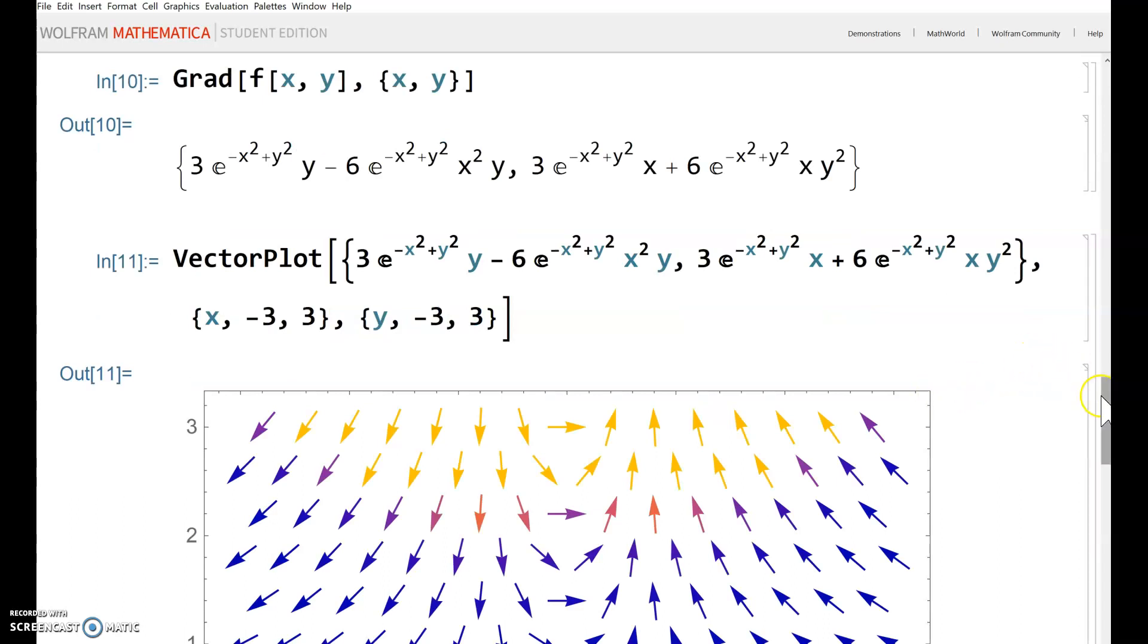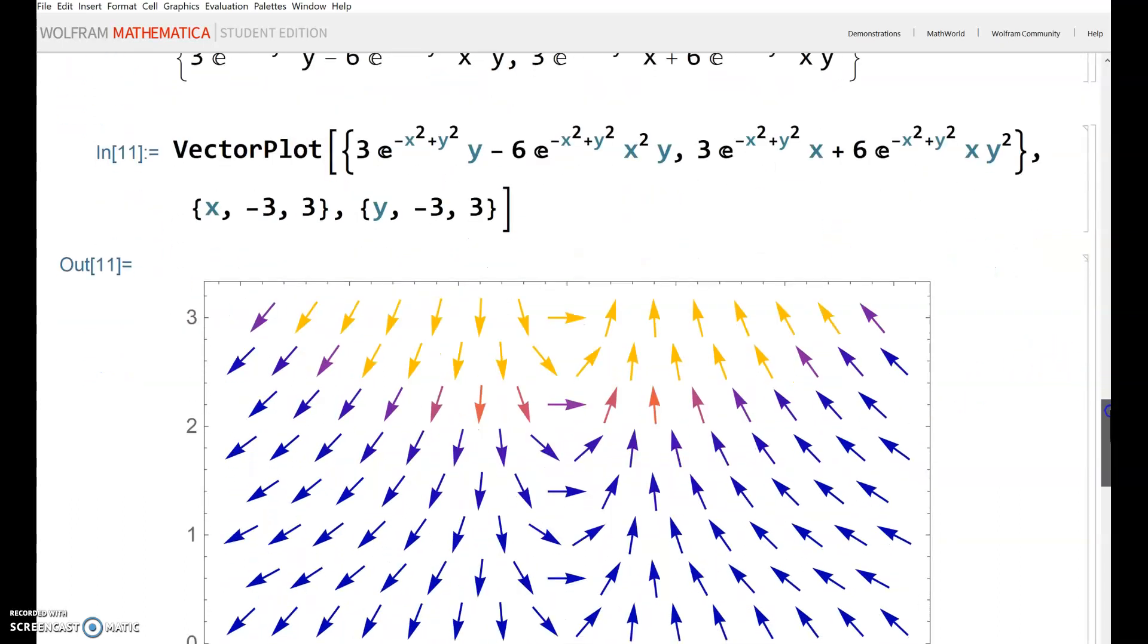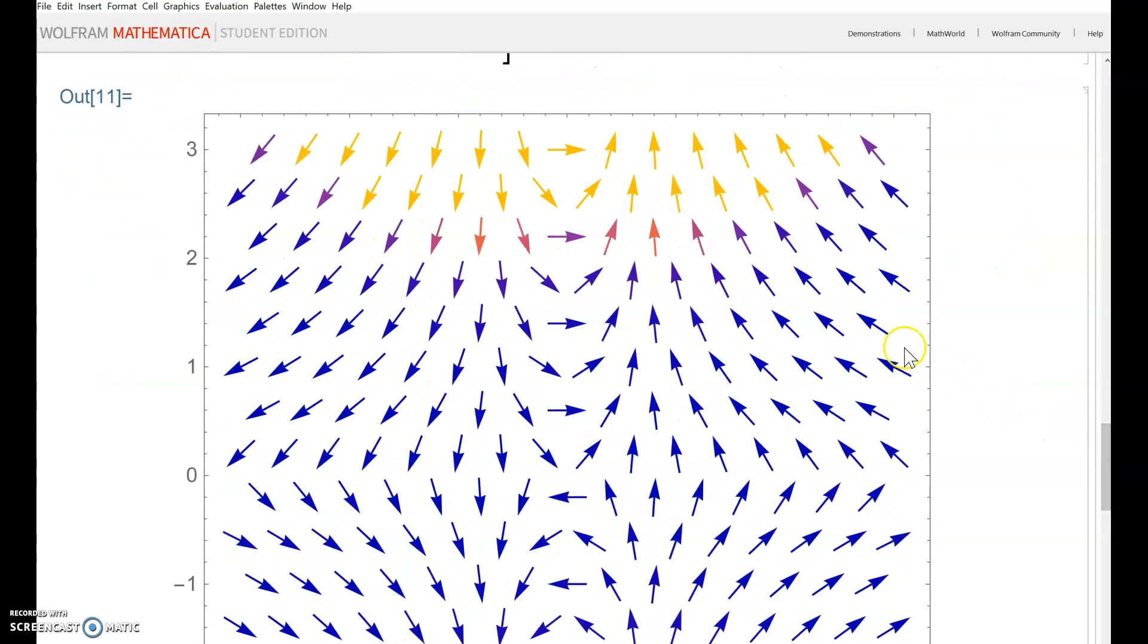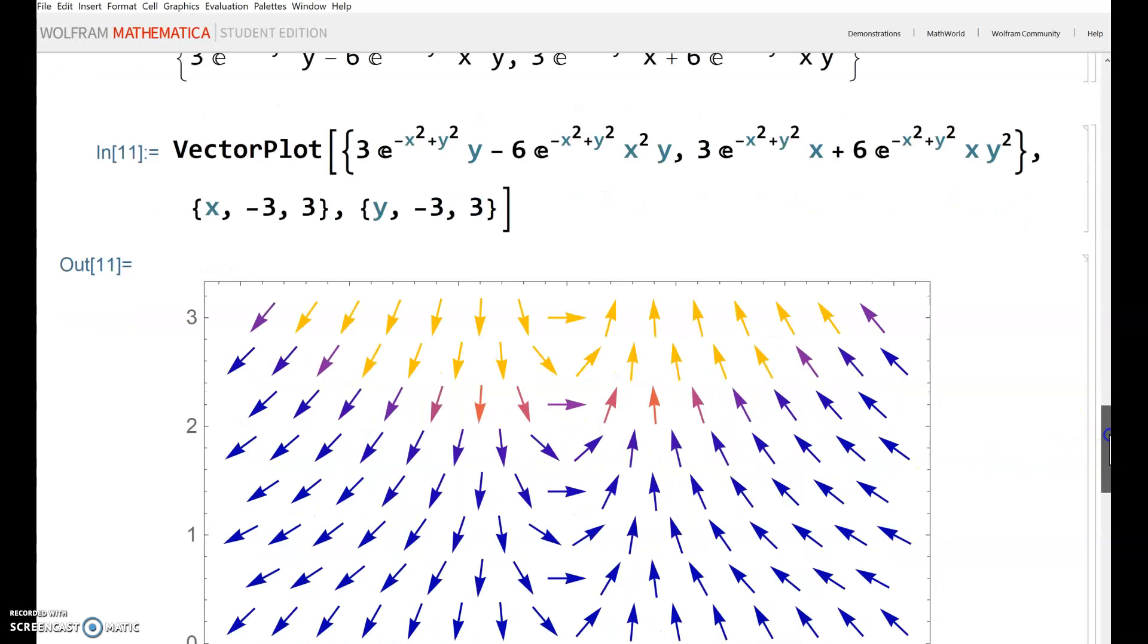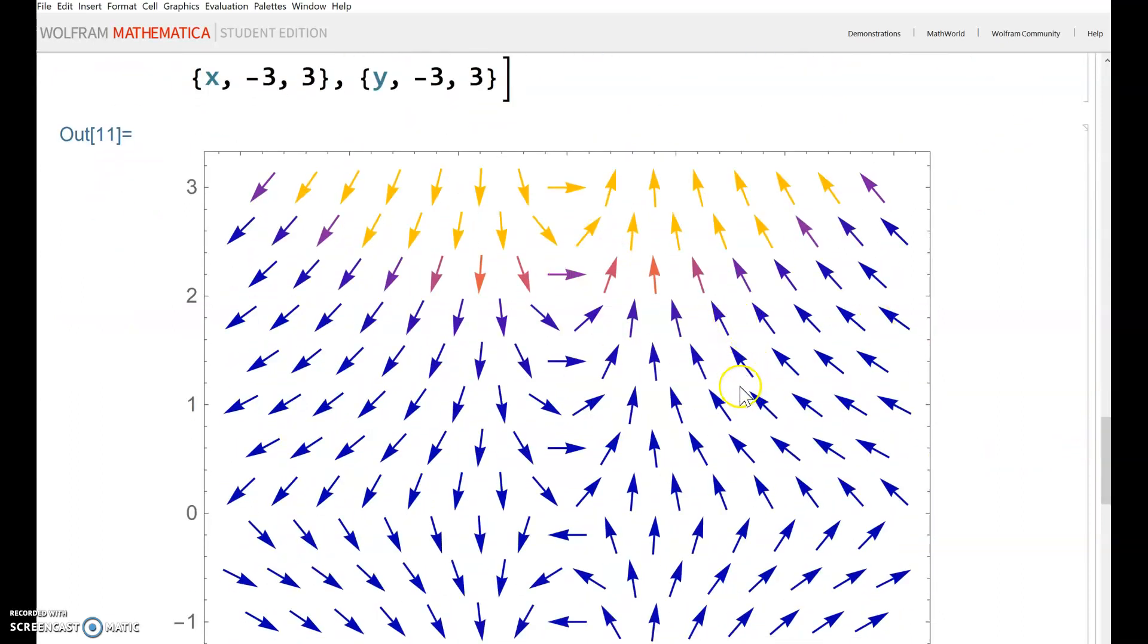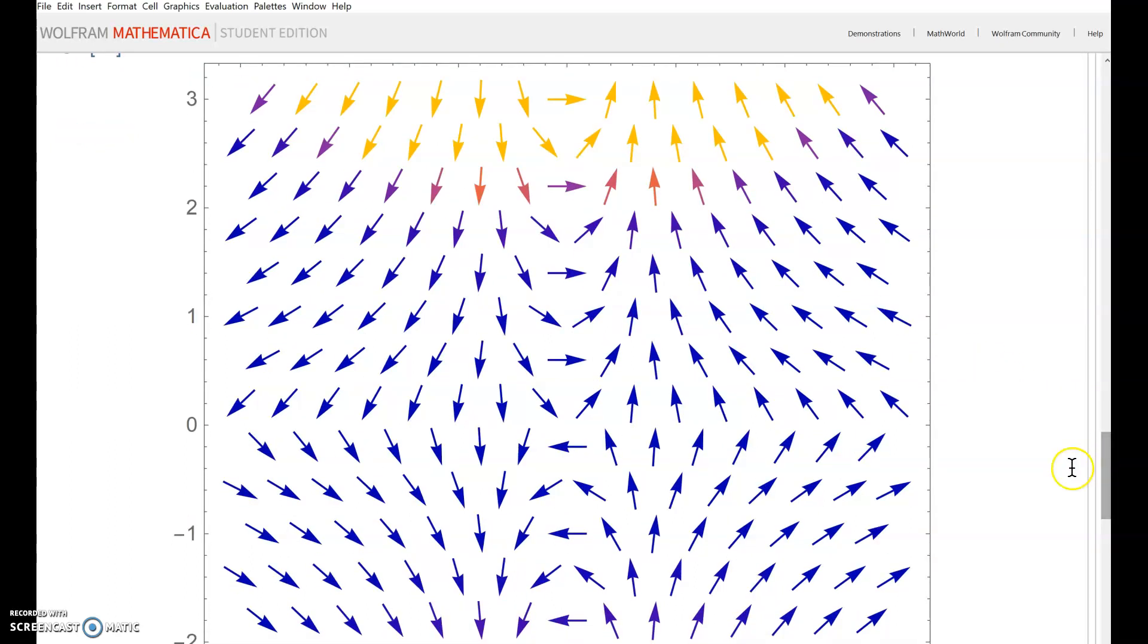This is the vector plot. For any x,y coordinate, the computer plugs in the coordinates into the gradient vector and gives you the direction of the arrow. Remember, gradient always points uphill.